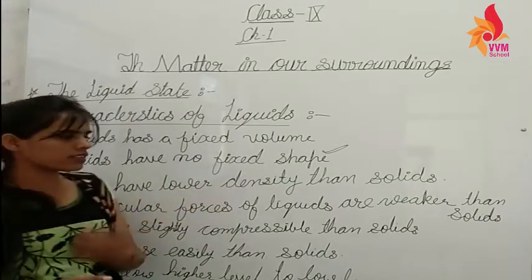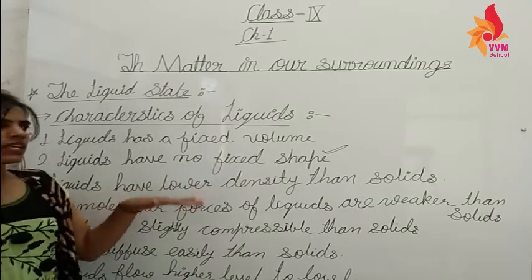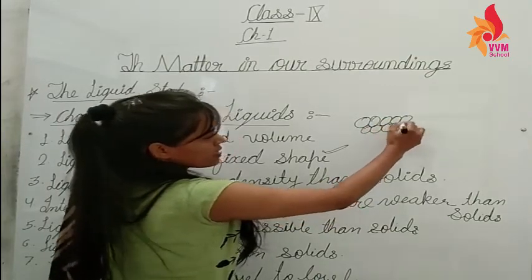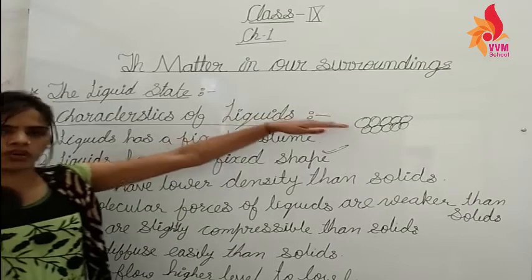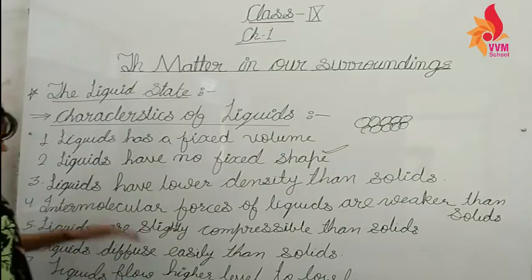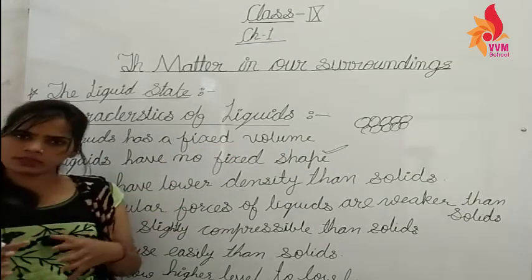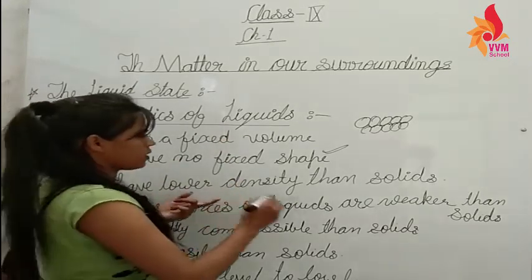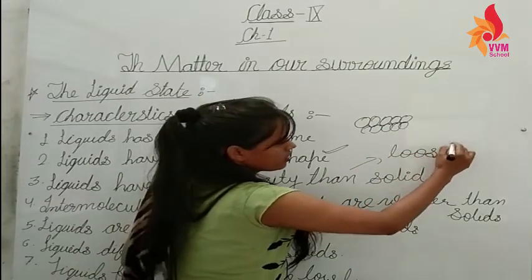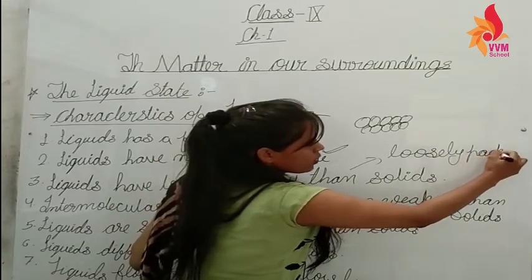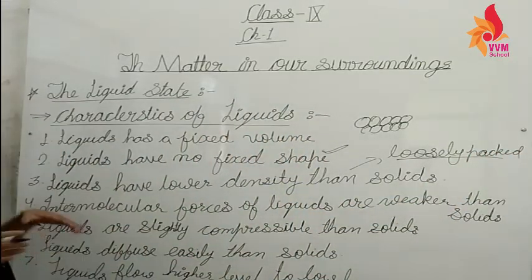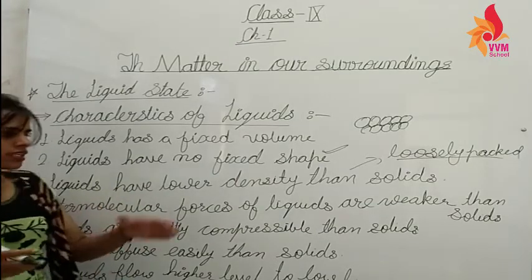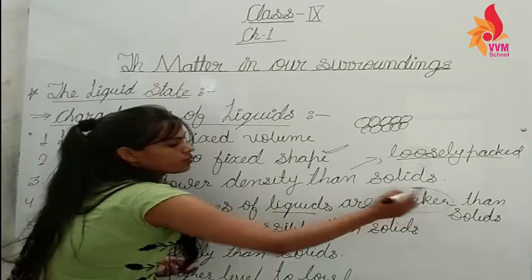Liquids have lower density than solids. Solids are more dense because their particles are tightly packed with no space between them. But in liquids the particles are loosely packed, so they are less dense than solids. Also, intermolecular forces in liquids are weaker than in solids.